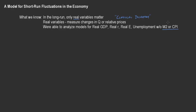This is really what we've been talking about with classical dichotomy and money neutrality — that the price level wouldn't matter for real variables in the long run. These two concepts are very closely intertwined: there's a real and nominal economy, and money neutrality means that changes in the price level wouldn't affect real variables in the long run.